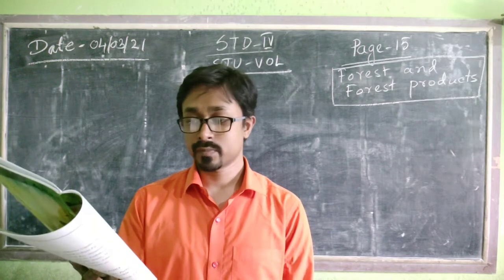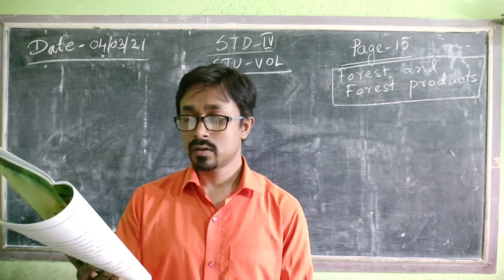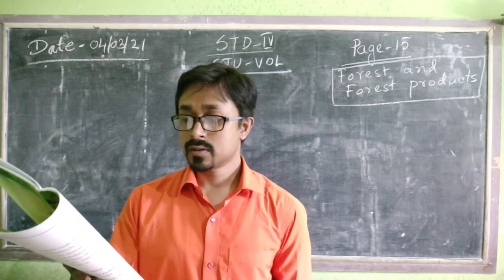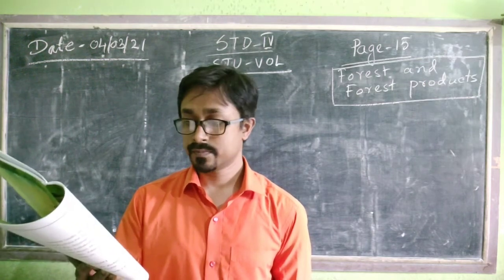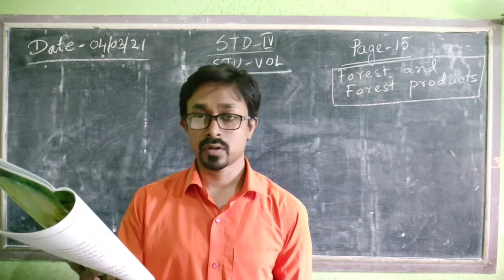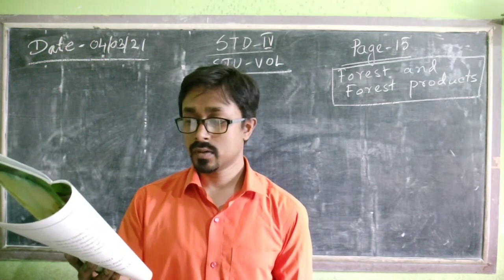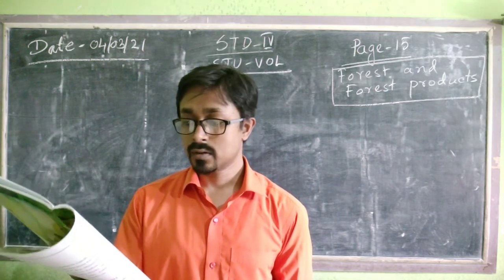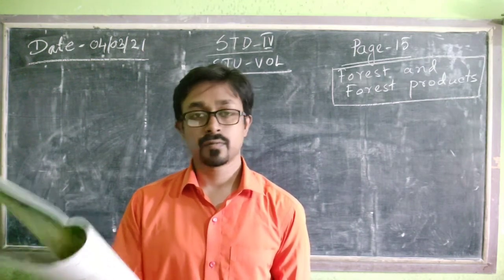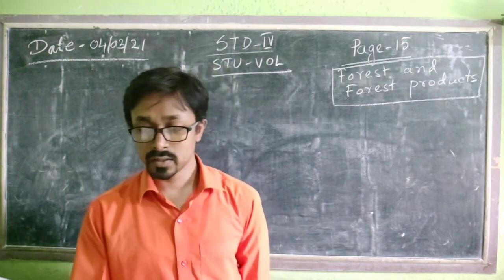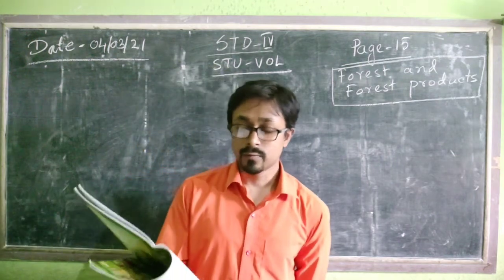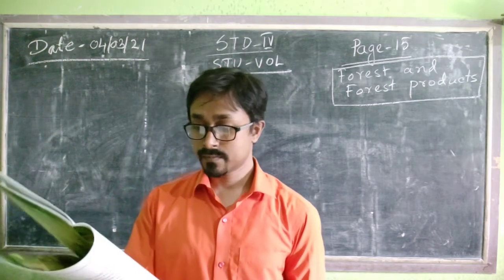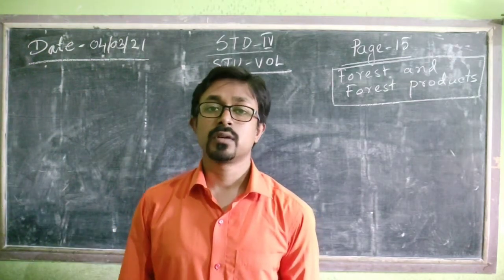Number four is honey, number five is dho, number six is bamboo, number seven is coconut, number eight is wood, and number nine is firewood. These are the main forest products that we get from the forest.